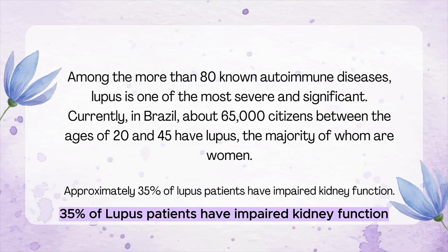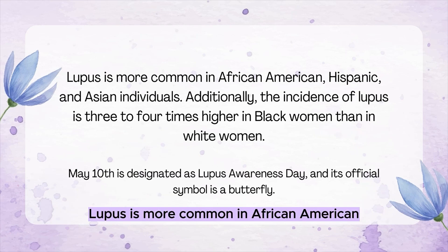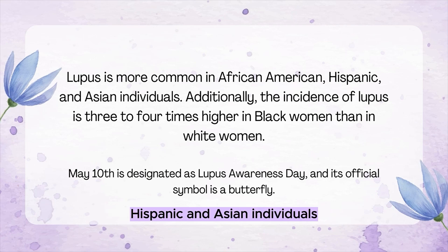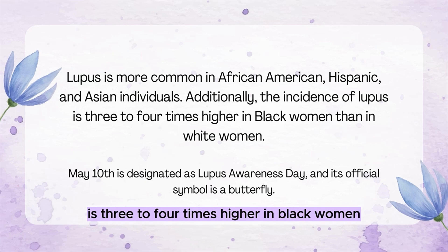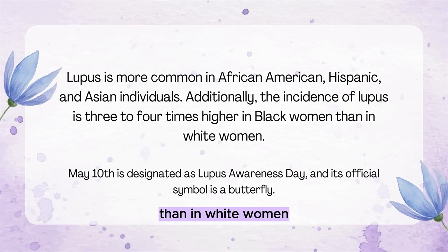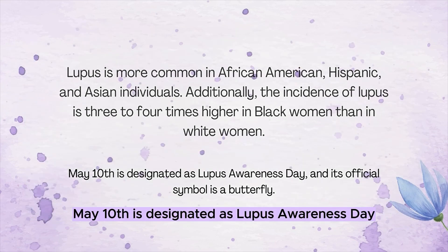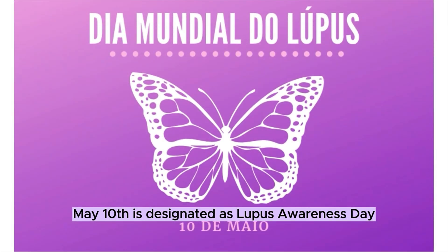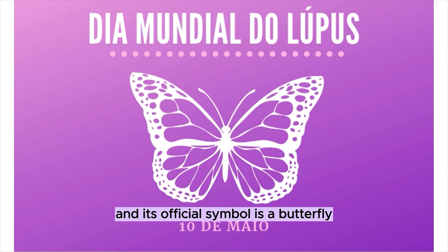Approximately 35% of lupus patients have impaired kidney function. Lupus is more common in African American, Hispanic, and Asian individuals. Additionally, the incidence of lupus is three to four times higher in Black women than in white women. May 10 is designated as Lupus Awareness Day, and its official symbol is a butterfly.